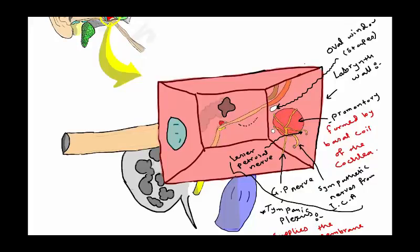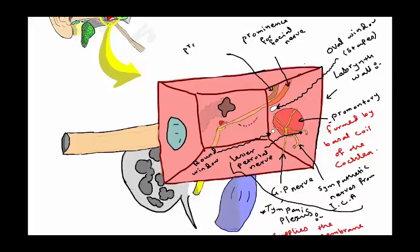There is the oval window, which is attached to the stapes, and the round window, which is attached to the scala tympani — we will discuss that later. There are also two prominences on the medial wall: one for the facial nerve and one for the lateral semicircular canal.